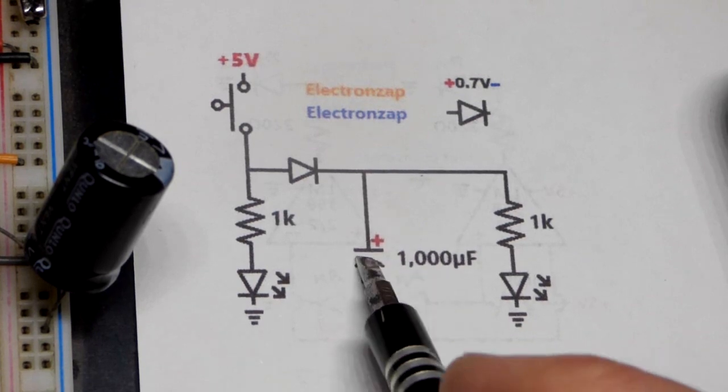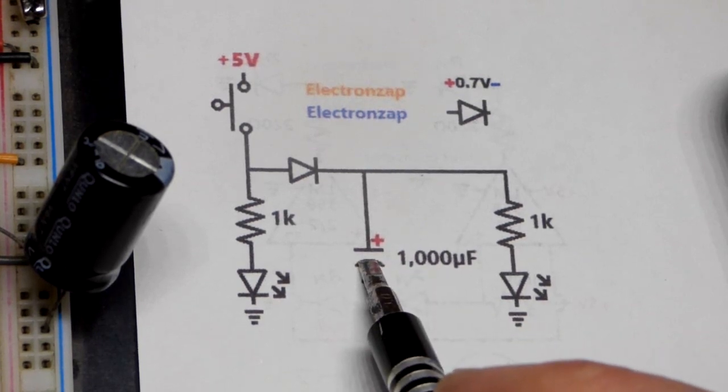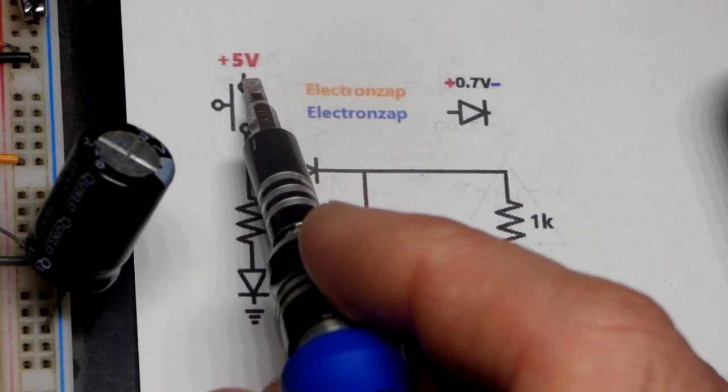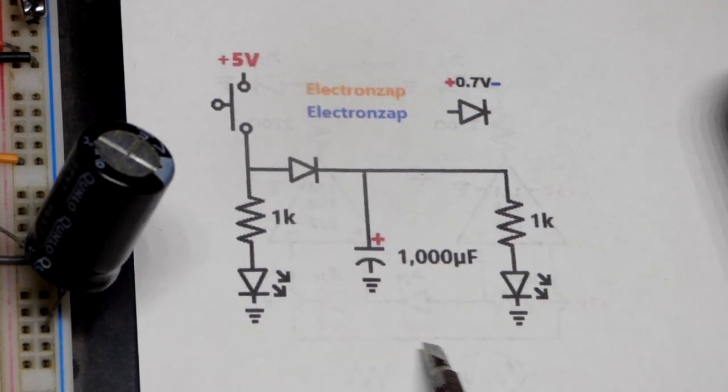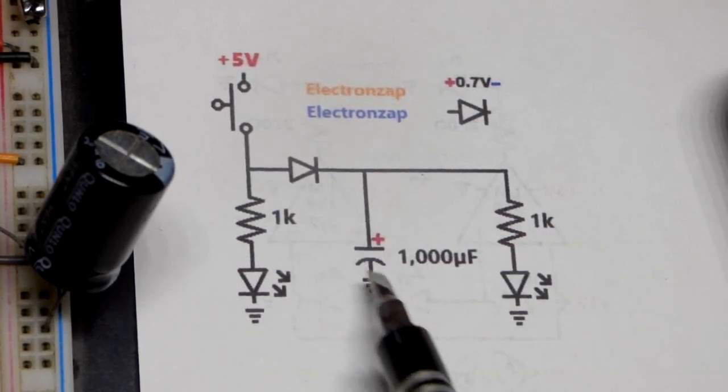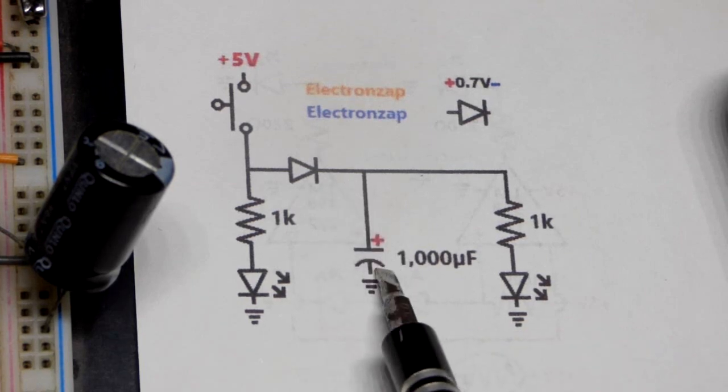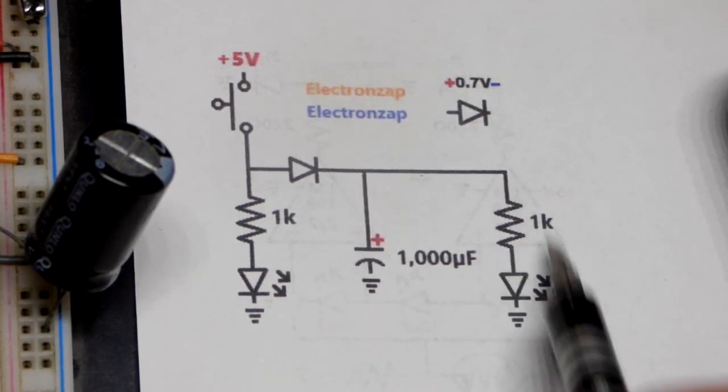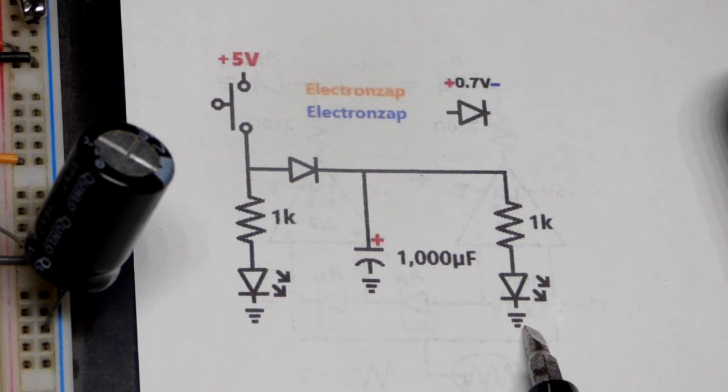But I think we're okay with the 1000 microfarad right there. Any larger value capacitor, especially when the voltage goes up, you'd want like a resistor to limit the current a little bit. But you still want the capacitor to charge about instantly. And at the same time we're going to have power through the load there.